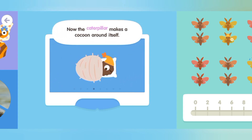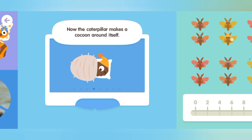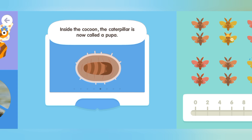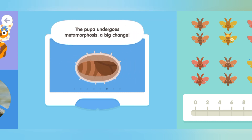Now the caterpillar makes a cocoon around itself. Inside the cocoon, the caterpillar is now called a pupa. The pupa undergoes metamorphosis — a big change.